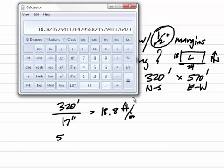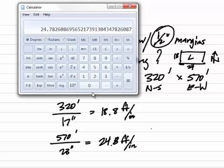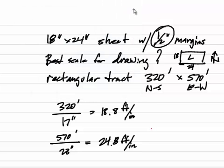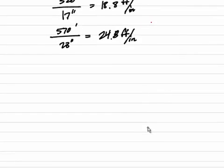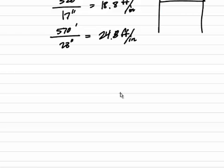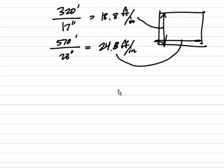Let's do the same thing for 570 feet. My east-west plottable area on the map would be 24 inches minus a half minus a half, so that's 23 inches. I'll simply take that and say 570 divided by 23 inches, and I get 24.8 feet per inch. So in the north-south direction I'd have 18.8 feet per inch, and in the east-west direction I'd have 24.8 feet per inch.